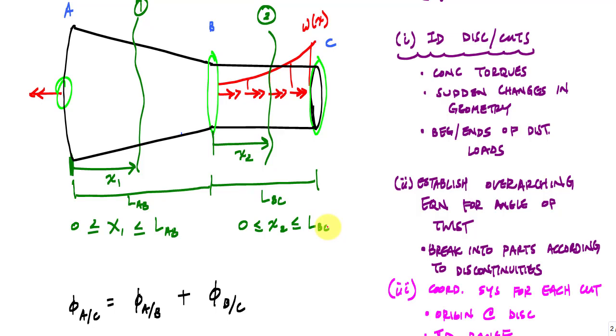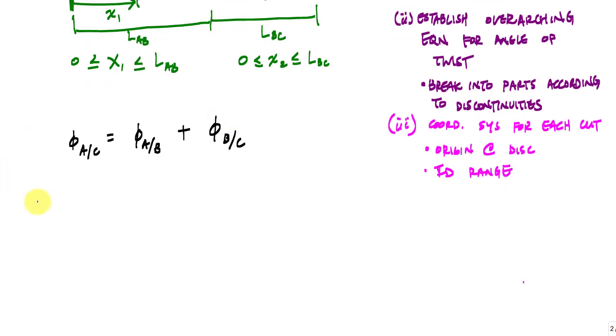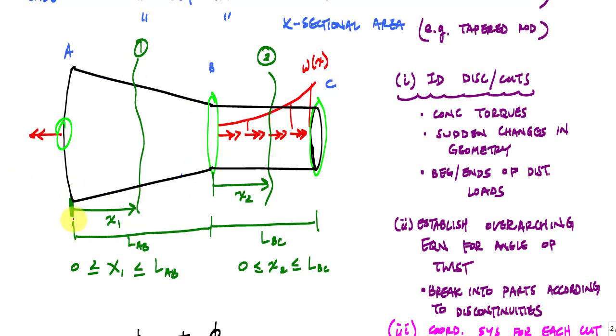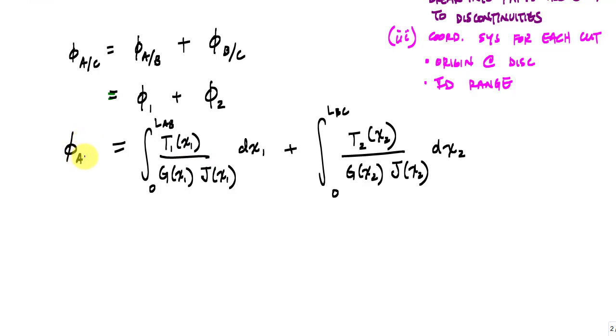So I've identified my origin and the coordinate system for each cut. And that is going to help me to determine the internal loading as a function of each coordinate system. Because in my overarching equation for the angle of twist, I can write this in terms of cuts that could be phi one plus phi two. The angle of twist for cut one is going to be the integral formulation because I have a varying area. And so my formulation might look like this. And the range for X1 is from zero to LAB like this. And then for cut two, I will have. And this is how I would set up my angle of twist formulation for varying area and varying internal torque, which is typically associated with tapered beams and distributed loads.